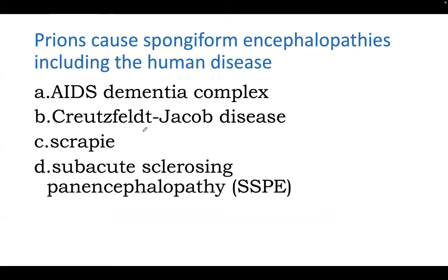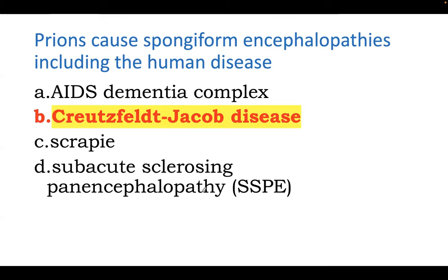Prions causing spongiform encephalopathies, including human disease. The correct answer is Creutzfeldt-Jakob disease. AIDS dementia is not caused by a prion. Subacute sclerosing encephalopathy is caused by measles. So you only have two things to consider: scrapie and Creutzfeldt-Jakob. The most common prion disease that affects humans is Creutzfeldt-Jakob, associated with the prion protein PRP. It presents with rapidly progressive dementia and startle myoclonus.